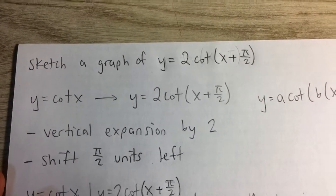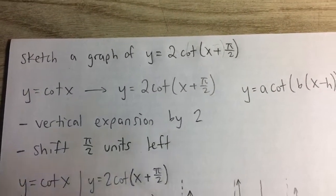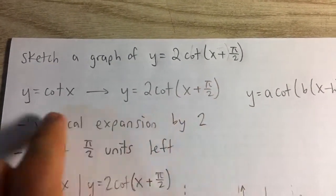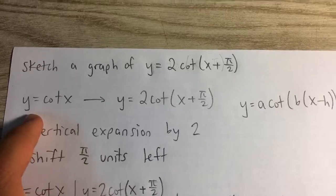Sketch a graph of y equals 2 cotangent of x plus pi over 2. So first off, we're going to recognize the transformations by comparing it to the original cotangent function.